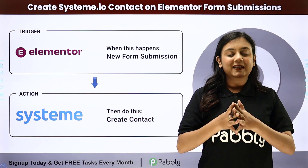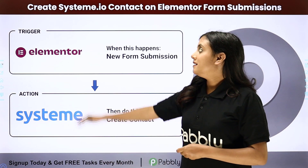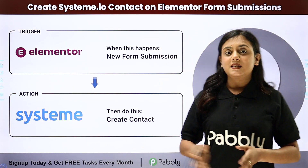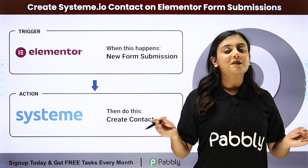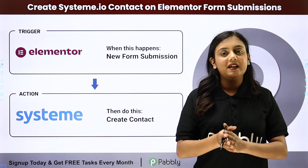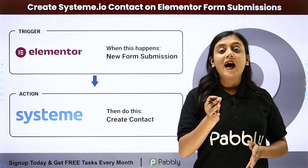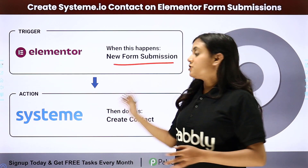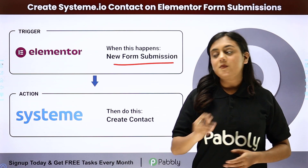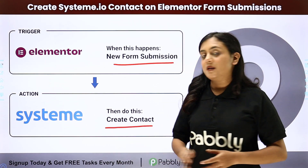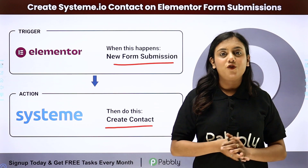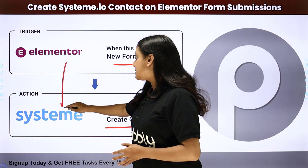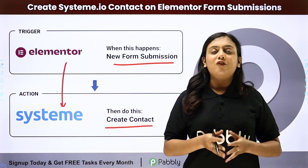Hello everyone, welcome back to Pabbly. In this video we are going to learn how to create a Systeme.io contact on Elementor form submission. I am a business owner collecting my customer's data with the help of form submissions. I have created a form with Elementor, and I want that every time a new form submission is done, automatically a contact should be created in my Systeme.io using the data from the form submission. For that, we need to create an automation between Elementor and Systeme.io with the help of Pabbly Connect.